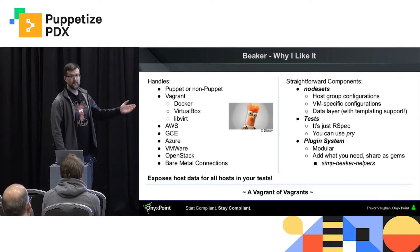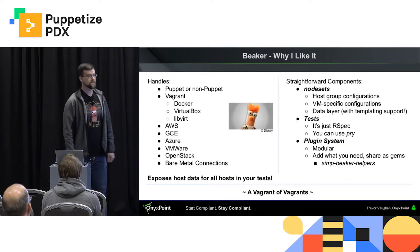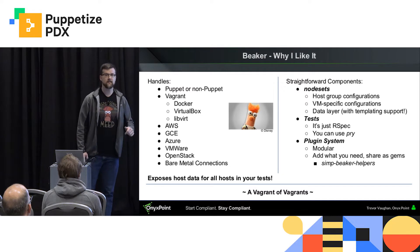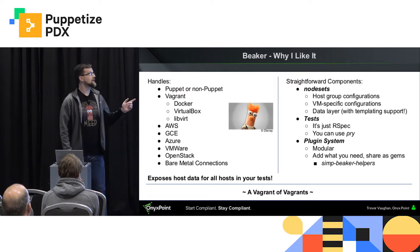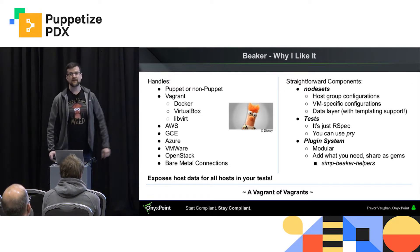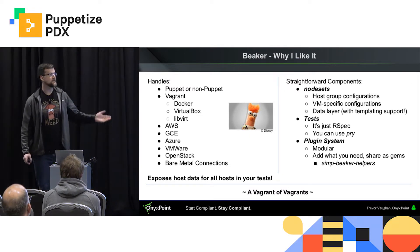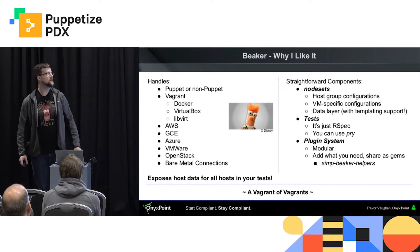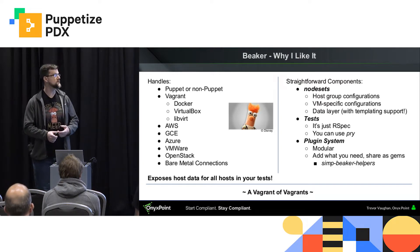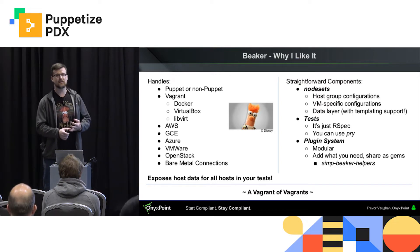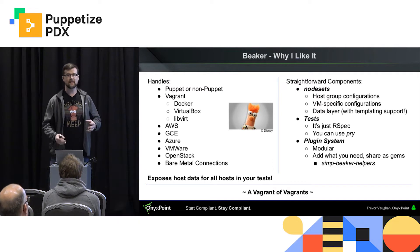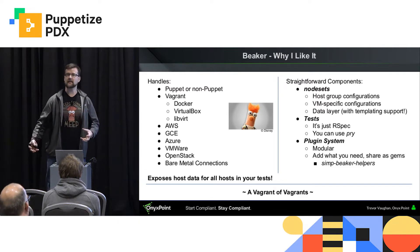So why do I like Beaker? It handles Puppet or non-Puppet environments. It is essentially, as one of my colleagues likes to say, a vagrant of vagrants — Docker, VirtualBox, libvirt, raw nodes, AWS, GCE, the gamut. Basically it connects to everything.